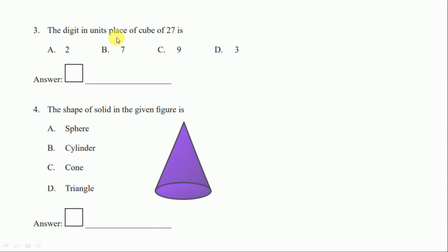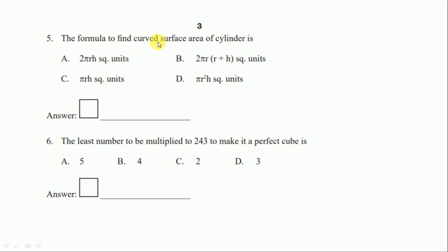Question 3: the digit in the unit place of the cube of 27. The cube of 27 has 3 in the unit place, so the right option is option D, 3. Question 4: the shape of the solid in the given figure is a cone, so the option is C, cone. Question 5: the formula to find the curved surface area of a cylinder — this is a direct question. The right answer is option A, 2πrh square units.